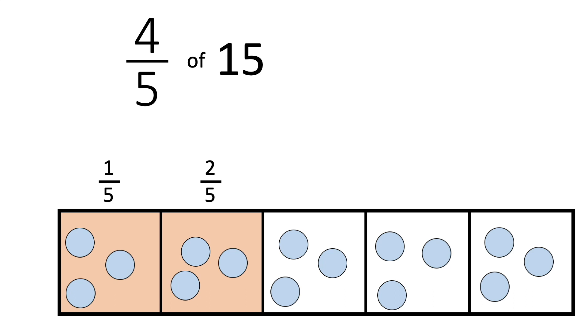So, one-fifth is three. Two-fifths will be six. Three-fifths will be nine. Four-fifths equals twelve. So, four-fifths of fifteen equals twelve.